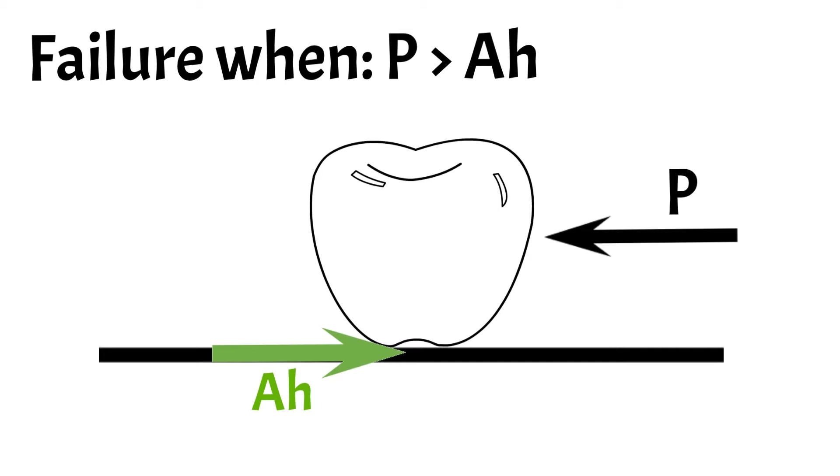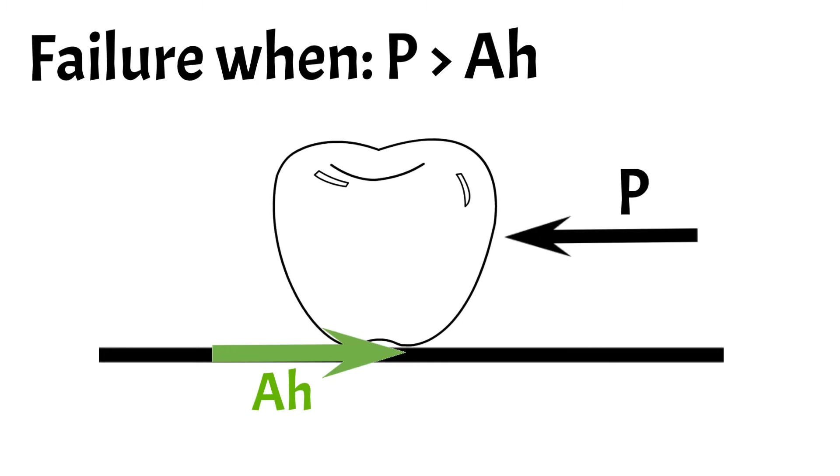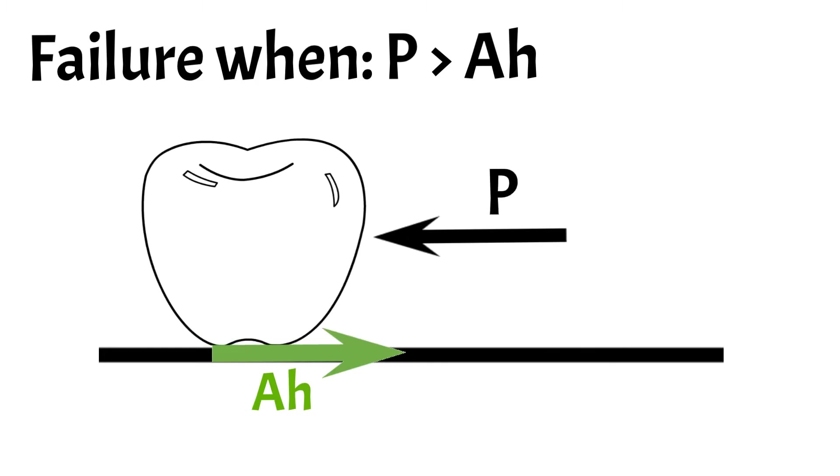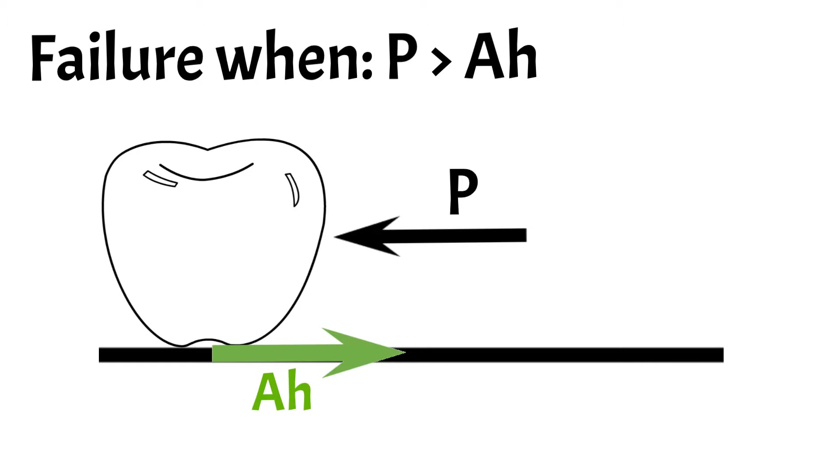In the example of our apple, we only have to apply a small load on the side of the apple and it will slide away. In that scenario the load is bigger than what the horizontal reaction forces can take.